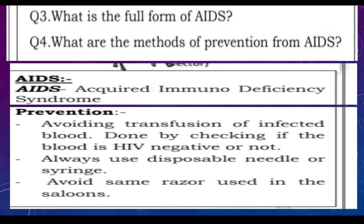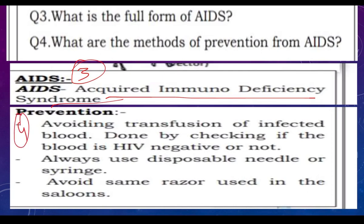Question 3: What is the full form of AIDS? Answer — Acquired Immunodeficiency Syndrome. Question 4: What are the methods of prevention of AIDS? Answer — avoid transfusion of infected blood, always use disposable needles or syringes, and avoid sharing razors in saloons.